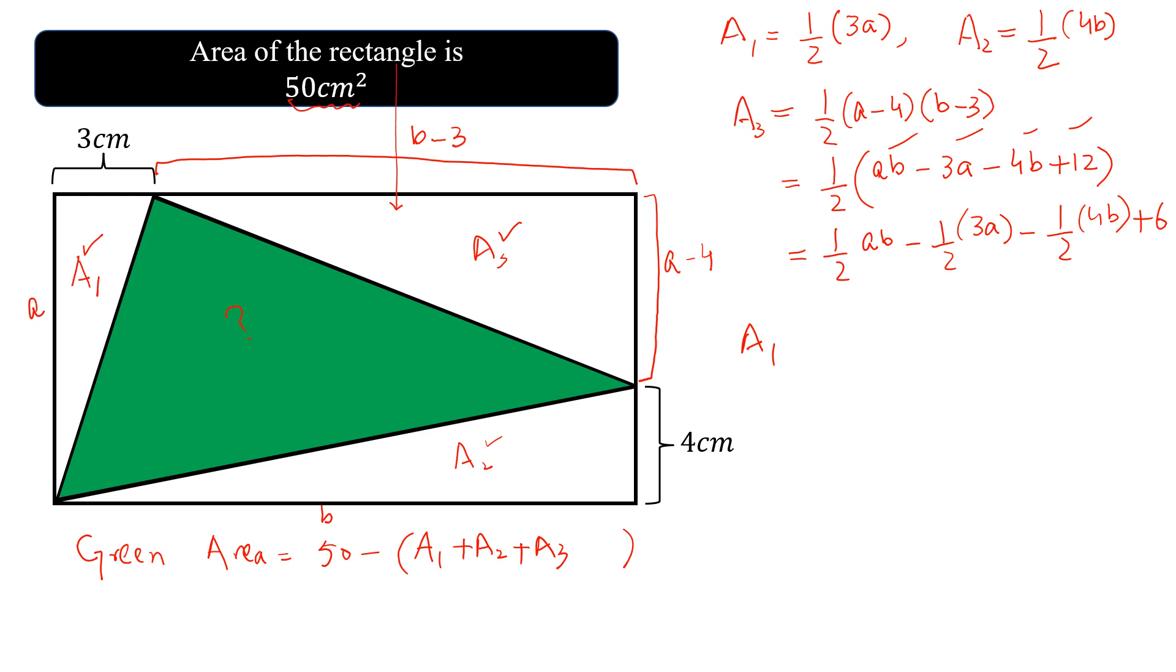Now we add A1 plus A2 plus A3. So half of 3a plus half of 4b plus half of ab minus half of 3a minus half of 4b and plus 6. This term will be cancelled with this. This term will be cancelled with this and we will get half of ab plus 6.